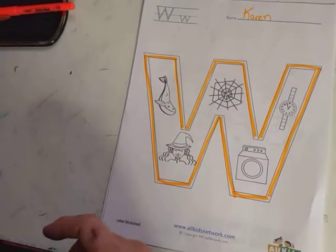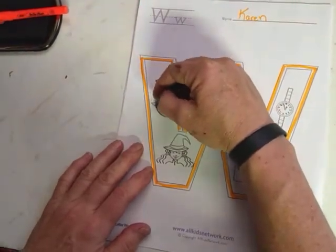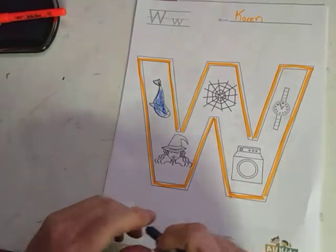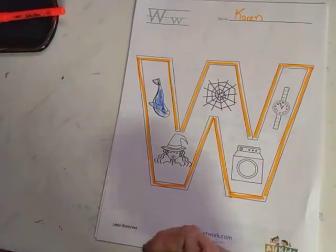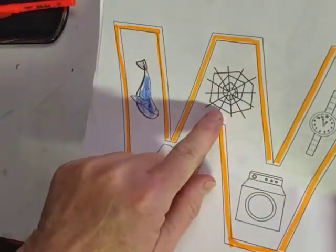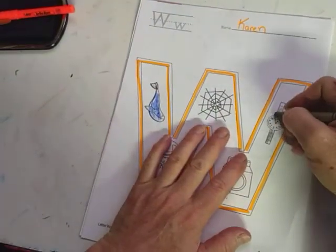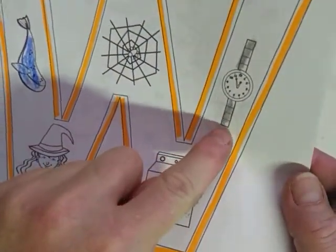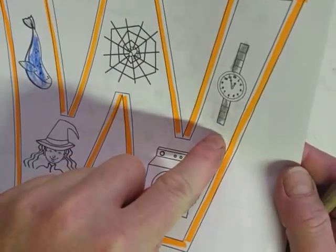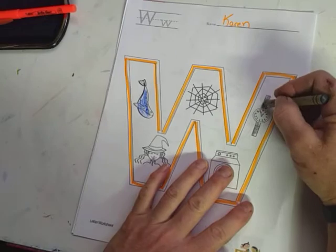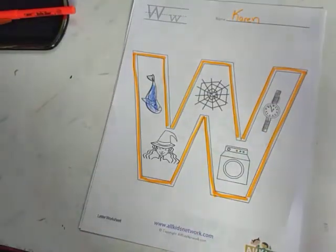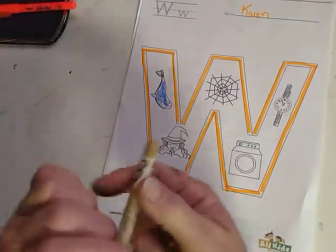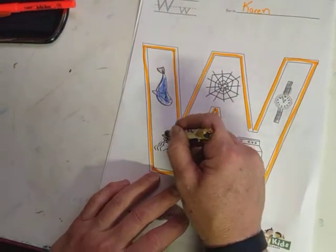So what are some things that are on this page that start with and make the W sound? What is this? It's a whale. And then this might be a little hard to tell, but there is a spider web. And then what is this? It has numbers on it. This is a watch. A watch makes a pretty good gift for Father's Day, which is coming up in June, if you notice your dad's arm is missing a watch.